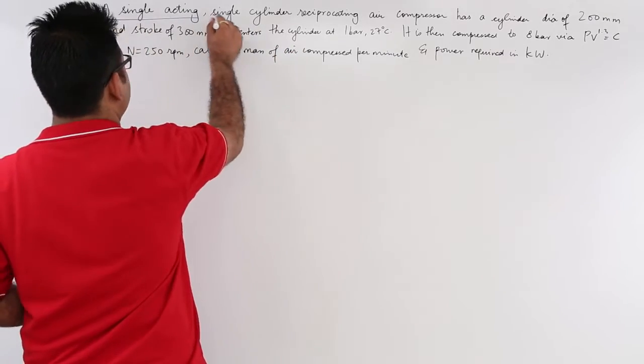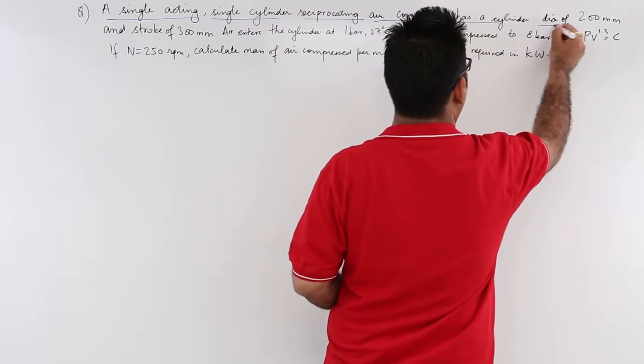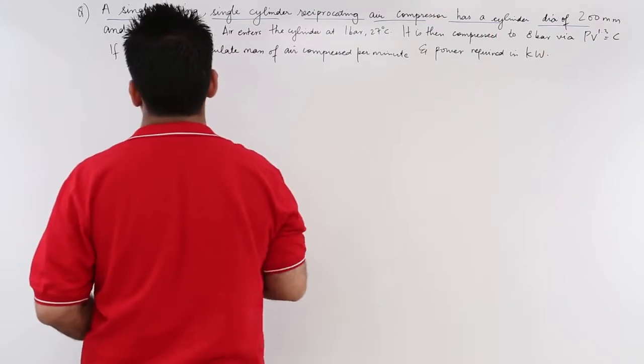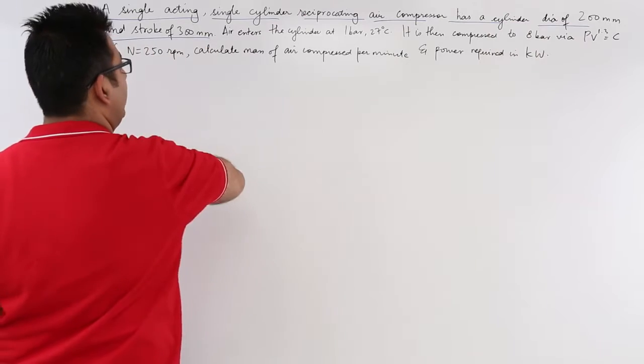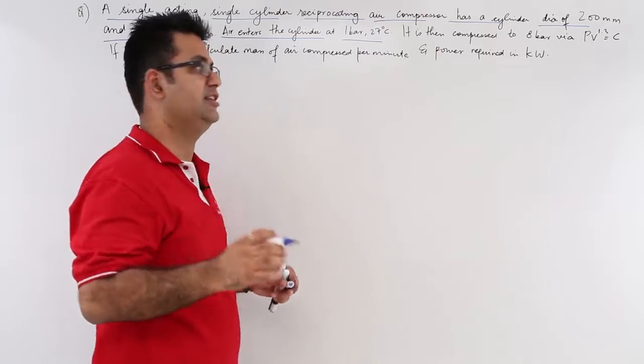A single acting, single cylinder reciprocating air compressor has a cylinder diameter of 200 mm and stroke of 300 mm. Air enters the cylinder at 1 bar and 27 degree Celsius.